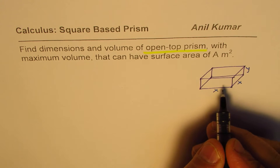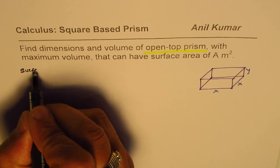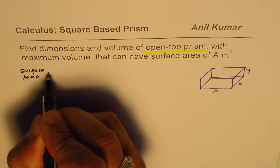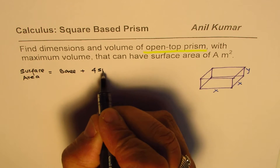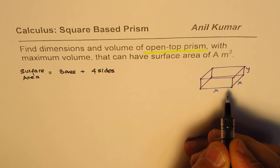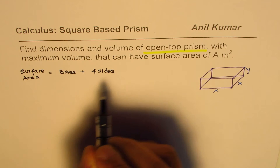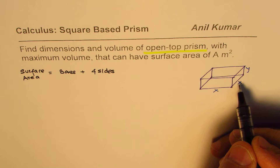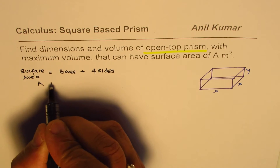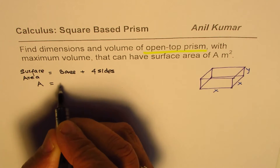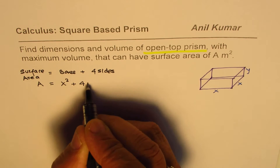As you can see from the figure, we have five surfaces since the top is open. So the surface area equals the base area plus four sides. The area of the base is X times X, which is X², and each side area is X times Y. So we write: A = X² + 4XY.